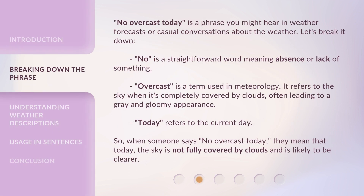No Overcast Today is a phrase you might hear in weather forecasts or casual conversations about the weather. Let's break it down. No is a straightforward word meaning absence or lack of something. Overcast is a term used in meteorology — it refers to the sky when it's completely covered by clouds, often leading to a gray and gloomy appearance.